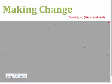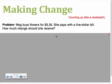Making change is another important concept when it comes to money. Like any time you've been at the store and watched your parents pay with cash — cash is another term for money — you'd notice that the cashier or vendor oftentimes owes them change back. In this example, Meg buys flowers for three dollars and thirty-five cents. She pays with a five dollar bill. How much change should she receive?